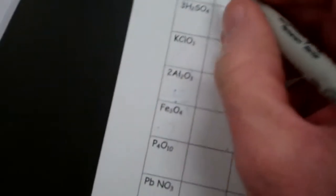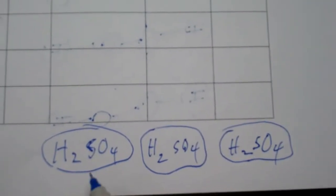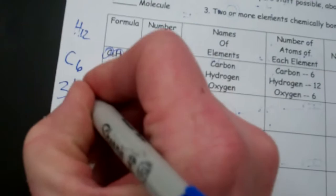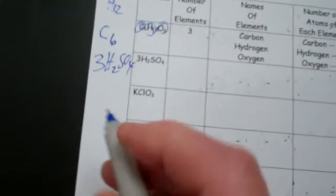So what that means is when you have three H2SO4, it means you have three molecules of H2SO4, which happens to be sulfuric acid. So that's what the coefficient, when you have a big number in front of the molecule, that tells you you have three of those molecules.